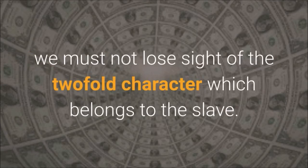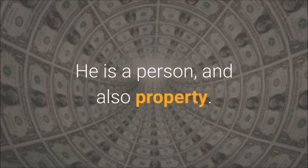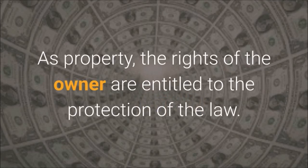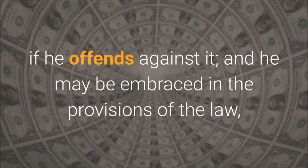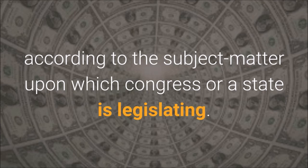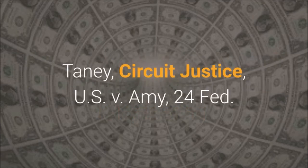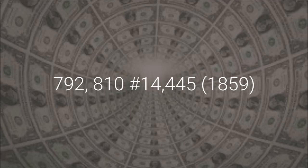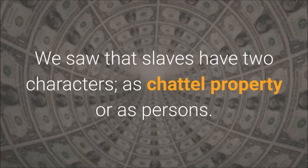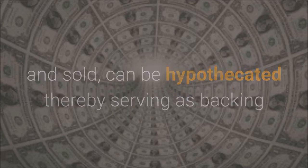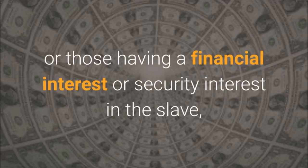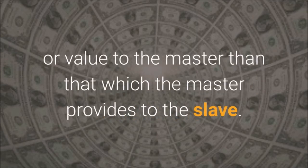In expounding this law, we must not lose sight of the twofold character which belongs to the slave. He is a person, and also property. As property, the rights of the owner are entitled to the protection of the law. As a person, he is bound to obey the law, and may, like any other person, be punished if he offends against it, and he may be embraced in the provisions of the law, either by the description of property or as a person, according to the subject matter upon which Congress or a state is legislating. Taney, Circuit Justice, U.S. v. Aimee, 24 Fed. Cas. 792, 810 No. 14,445. We saw that slaves have two characters: as chattel property or as persons. As property, the slave has commercial value, can be bought and sold, can be hypothecated thereby serving as backing or collateral for credit to the master, and are mostly dependent upon a master for the basic necessities of life.